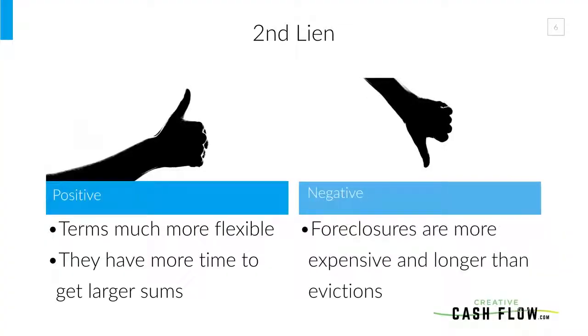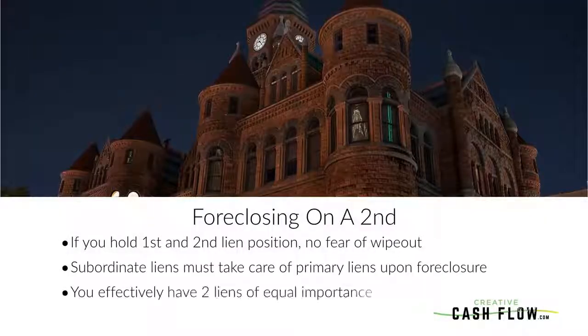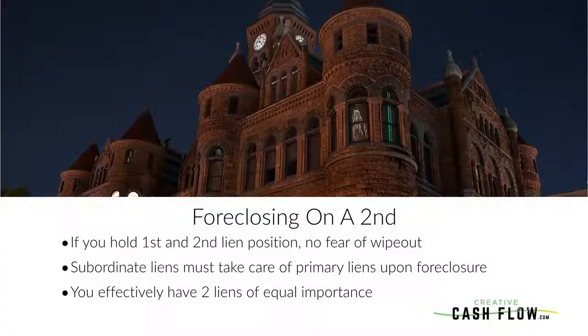A negative is you're going to have to foreclose on them if they don't pay, and foreclosures are much more expensive. That said, foreclosing on a second lien is not the end of the world when you hold both the first and the second lien. If you foreclose on the second lien position, you get ownership and possession of that property again — assuming nobody buys it at the courthouse steps — but it's your job to satisfy the first lien. Well, if you're in first lien position, that's okay; it's your job to satisfy yourself at that point. So you essentially have two liens of equal importance, and that keeps me from being afraid of doing this.